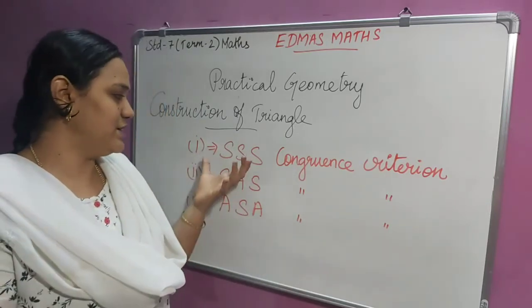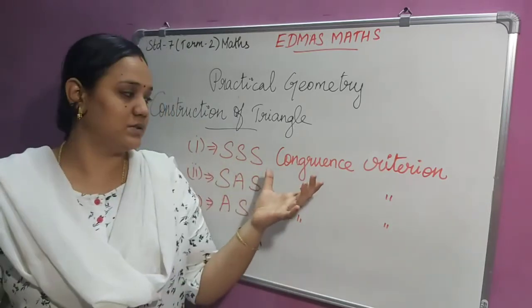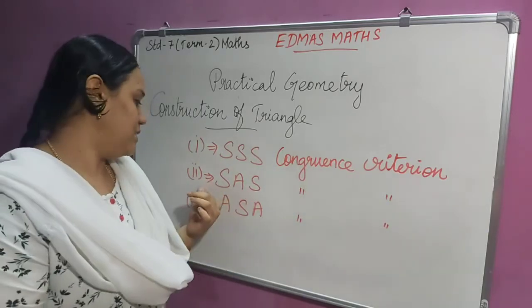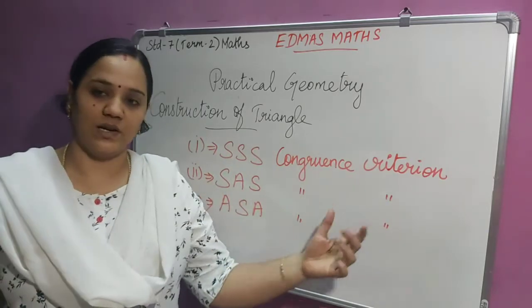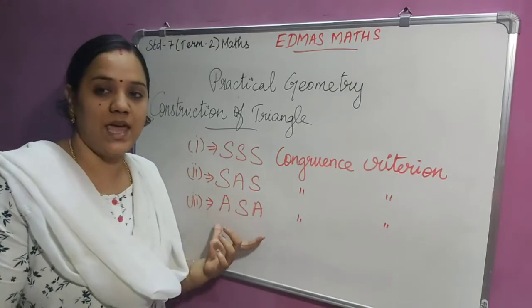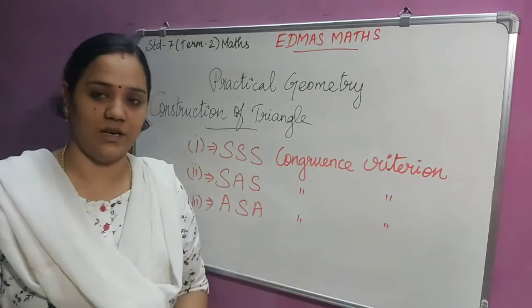The first one is SSS congruent criterion. The second one is SAS congruence criterion, and then the third one is ASA congruence criterion.